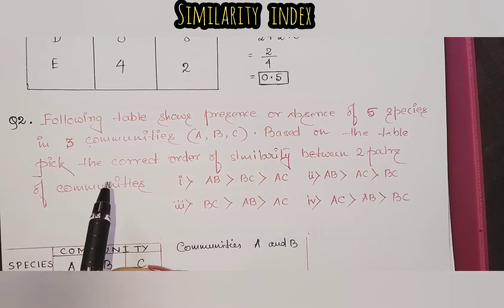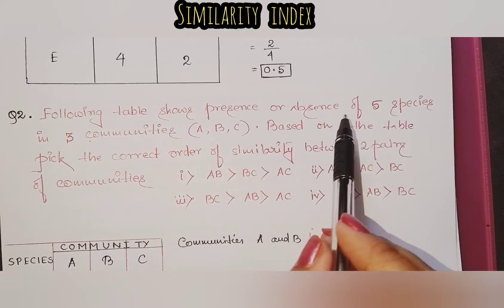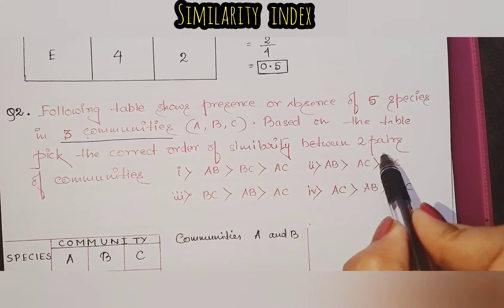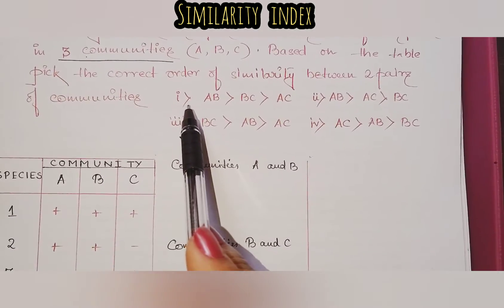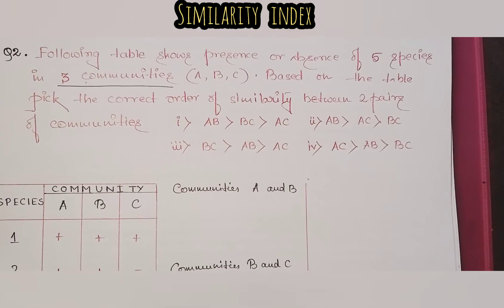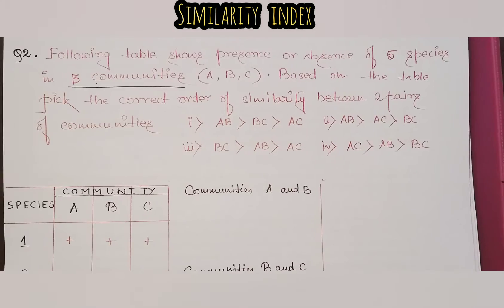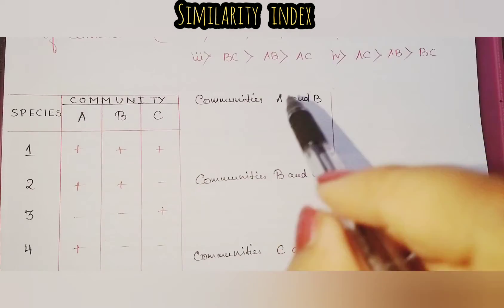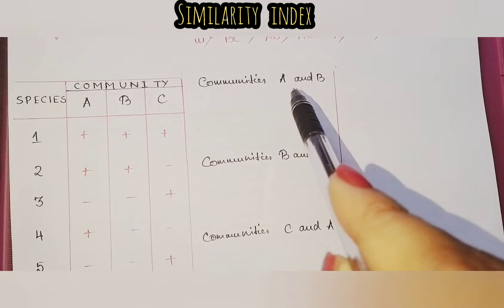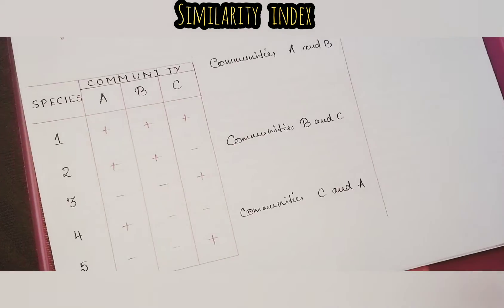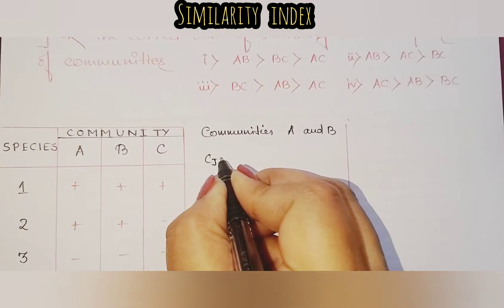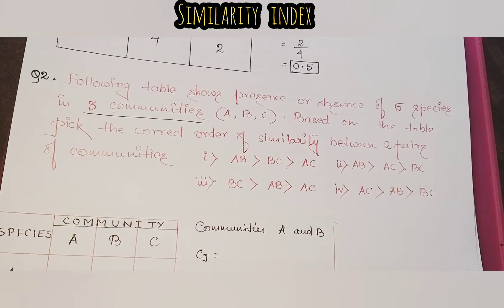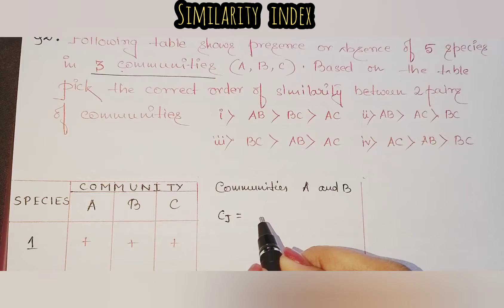Now the next problem. The following table shows the presence or absence of five species in three communities. Based on the table, pick the correct order of similarity between two pairs of communities. We'll take two communities at a time. Starting with communities A and B: CJ equals A divided by A plus B plus C.